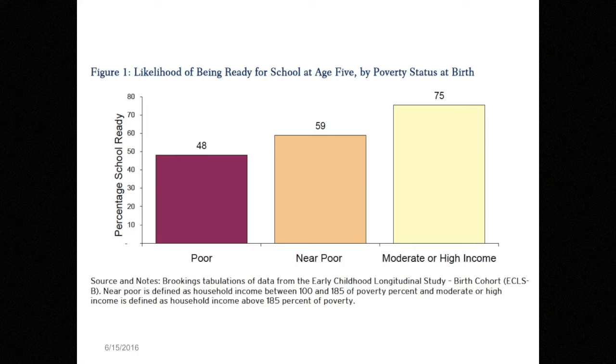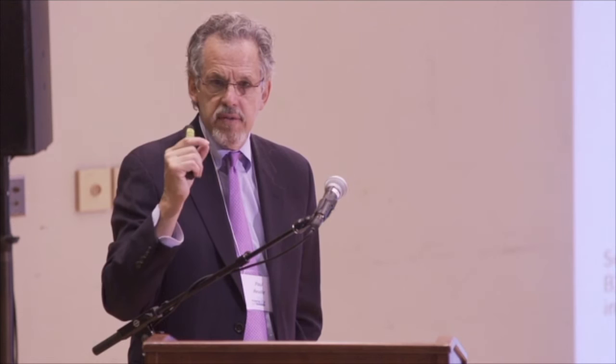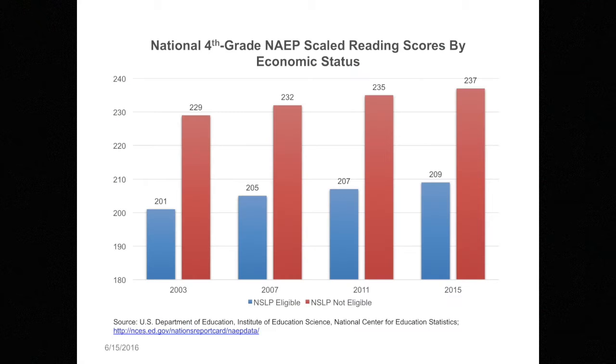Looking at the likelihood of being ready for school at age five by poverty status at birth, you have a wide range of kindergarten readiness — from two or three years behind to two or three years ahead. If you separate that stretch into quintiles and follow those children through their K-12 experience, there's very little movement between those quintiles during those 13 years. For those who believe in early education, the battle is essentially over before it even begins.